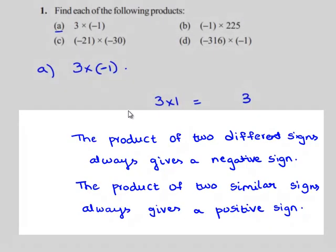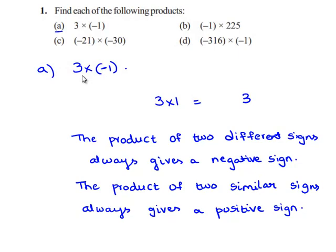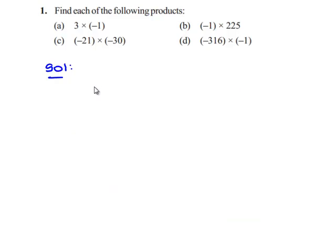Here, we can see that the sign of 3 is positive and the sign of 1 is negative. Therefore, positive into negative gives a negative sign. Therefore, 3 into minus 1 gives minus 3.